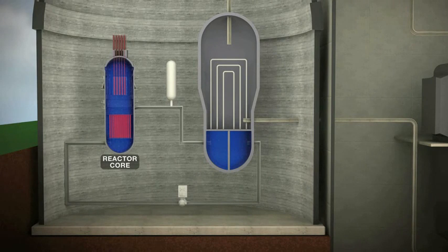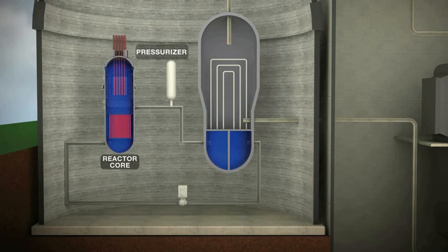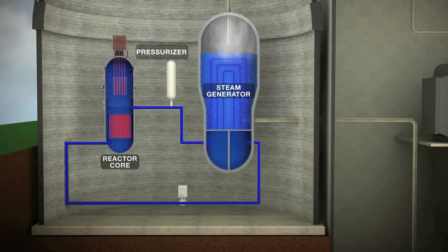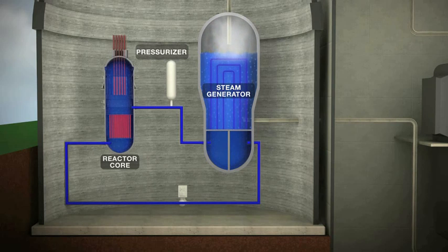In a pressurized water reactor, the heat from the water surrounding the nuclear fuel is kept under pressure to prevent it from boiling. The hot water is piped from the reactor vessel to a steam generator, where it transfers its heat to boil water and makes steam in a second system.